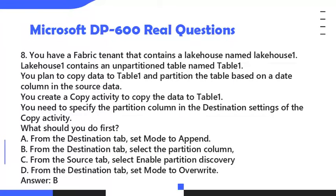Question 8. You have a Fabric tenant that contains a lakehouse named Lakehouse 1. Lakehouse 1 contains an unpartitioned table named Table 1. You plan to copy data to Table 1 and partition the table based on a date column in the source data. You create a copy activity to copy the data to Table 1. You need to specify the partition column in the destination settings of the copy activity. What should you do first? A. From the Destination tab, set mode to append. B. From the Destination tab, select the partition column. C. From the Source tab, select Enable Partition Discovery. D. From the Destination tab, set mode to overwrite. Answer: B.